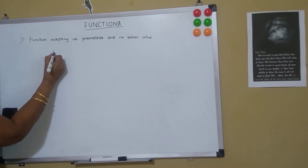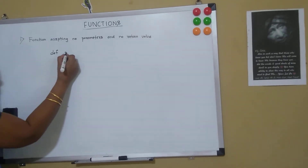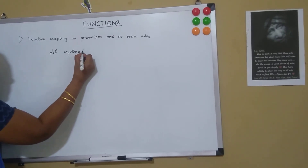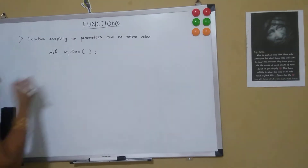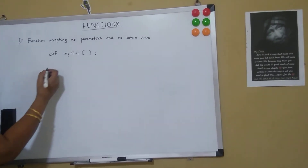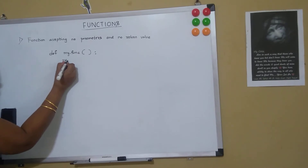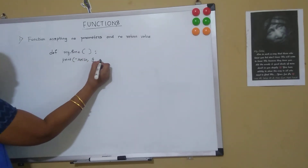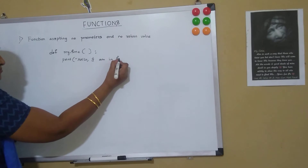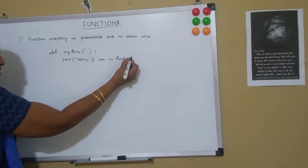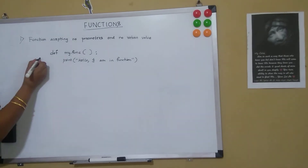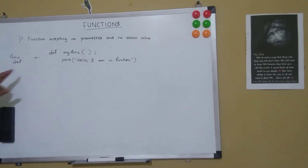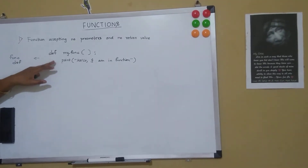I have the def keyword for defining a function, then 'my_func' as the function name, with empty parentheses and then a colon. Inside I say: print 'hello I am in function'. This is the function definition. Only by writing this code, the function does not get executed.